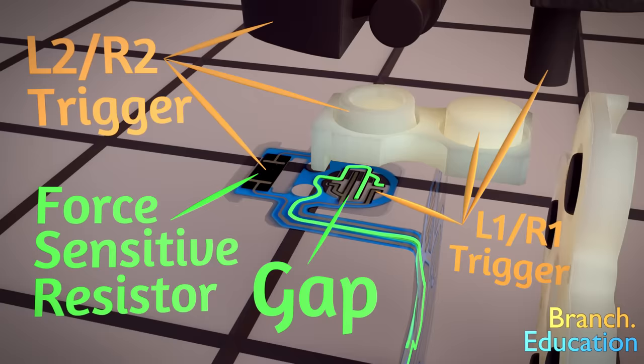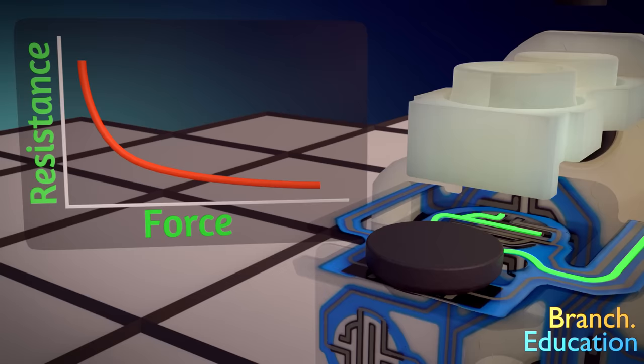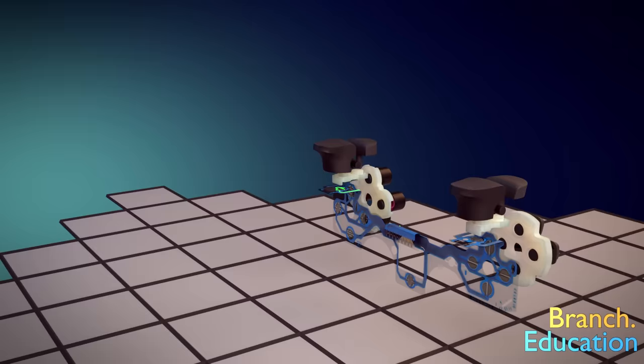This concept applies to all the buttons except the L2 and R2 triggers. Instead of having a gap that gets bridged, these two buttons use pressure-sensitive resistors. When the L2 and R2 trigger is pressed, the rubber button gasket applies a force to the pressure-sensitive resistor and the change in resistance is measured by the microcontroller. Details on how this works are included in the creator's comments.